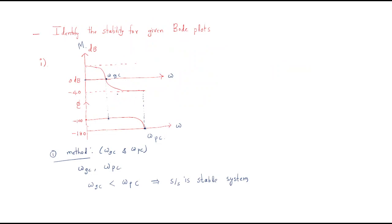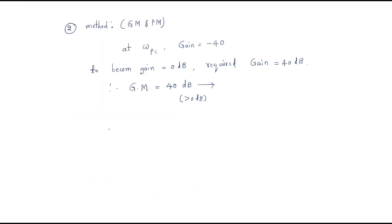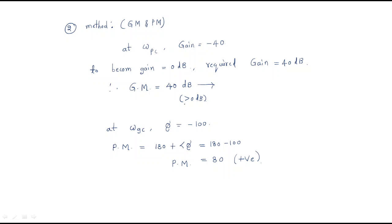What about phase margin? At the gain crossover frequency, the phase value is minus 100 degrees. The phase margin formula is 180 plus the angle. Therefore, 180 minus 100 gives a phase margin of 80 degrees. Phase margin is positive. Whenever gain margin is more than 0 dB and phase margin is positive, the given system is a stable system.